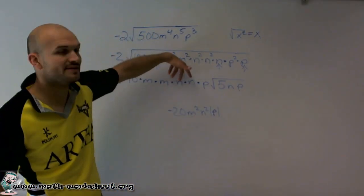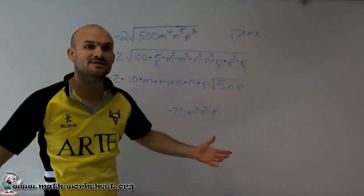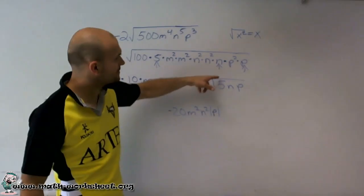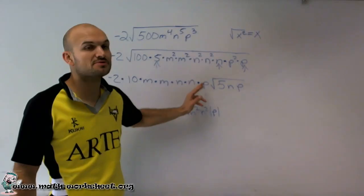See here, if these are positive or negative, it would have been OK because n times n gives you n squared, which we know is going to be positive. But here, we need to represent it with the absolute value because it's just p by itself.